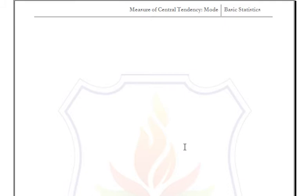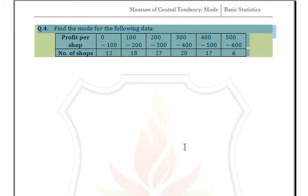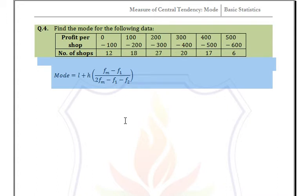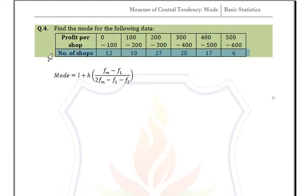Now for grouped data we use the formula: Mode = L + h × (fm − f1) / (2·fm − f1 − f2), where fm is the maximum frequency, f1 is the preceding frequency, f2 is the succeeding frequency, and L is the lower limit of the modal class. Observing the frequencies, the maximum frequency is 27.